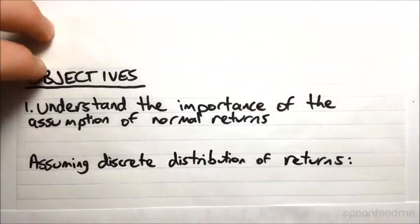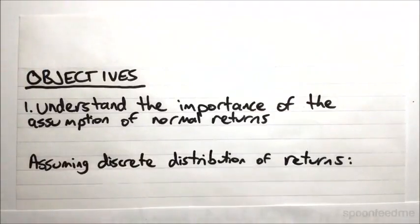We had a look at the expected value and standard deviation of returns, but we did so basically under the assumption of a discrete distribution. Simply to get the idea across, I basically said there are a certain number of possible returns and each one has a certain probability of occurring.